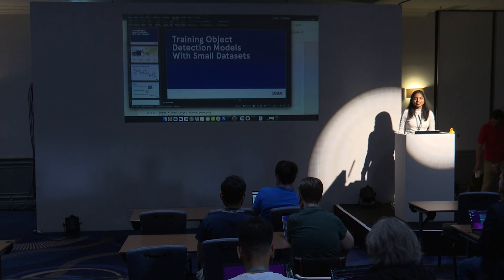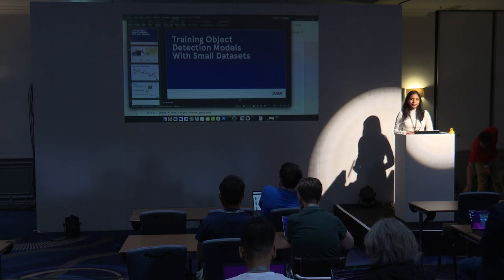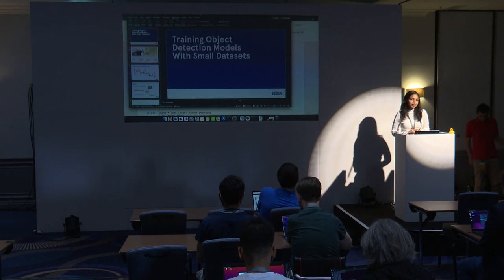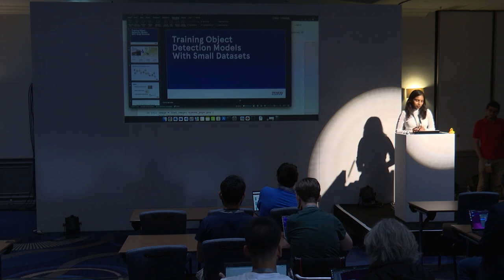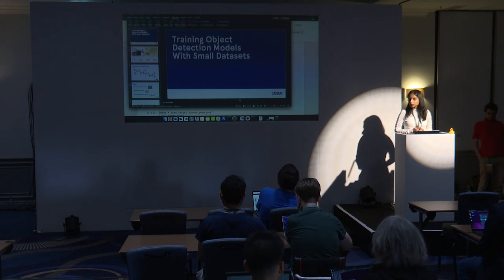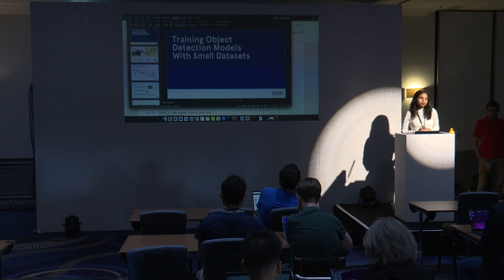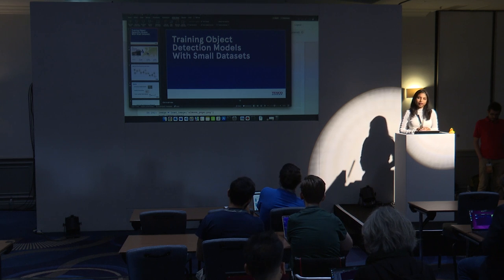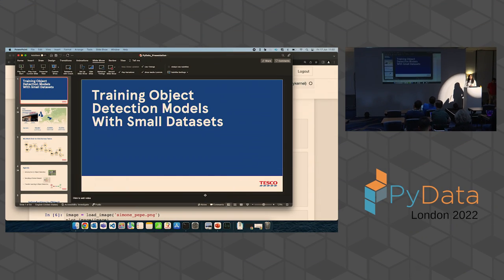Thank you for that introduction and thank you all for being here today. I'm Anusha, here with my colleagues Vincenzo and Patrick. We're data scientists at Tesco, and today we are here to talk to you about training object detection models with small datasets. The primary motivator for this session is that annotated data is very expensive, and even more so in the context of object detection. We're here to share some ideas and techniques that will hopefully come in handy when trying to solve this challenge.